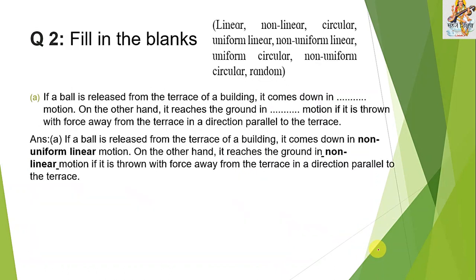Question 2: Fill in the blanks. If a ball is released from the terrace of a building, it comes down in non-uniform linear motion. On the other hand, if it is thrown with force away from the terrace in the direction parallel to the terrace, it reaches the ground in non-linear motion.